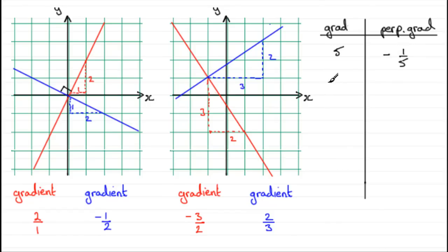If I had a line with a gradient of minus three quarters, what would be the perpendicular gradient? Switch the sign, be a plus, turn the fraction upside down. So you get four thirds. And I'd leave it at four thirds. I wouldn't write it as one and a third.